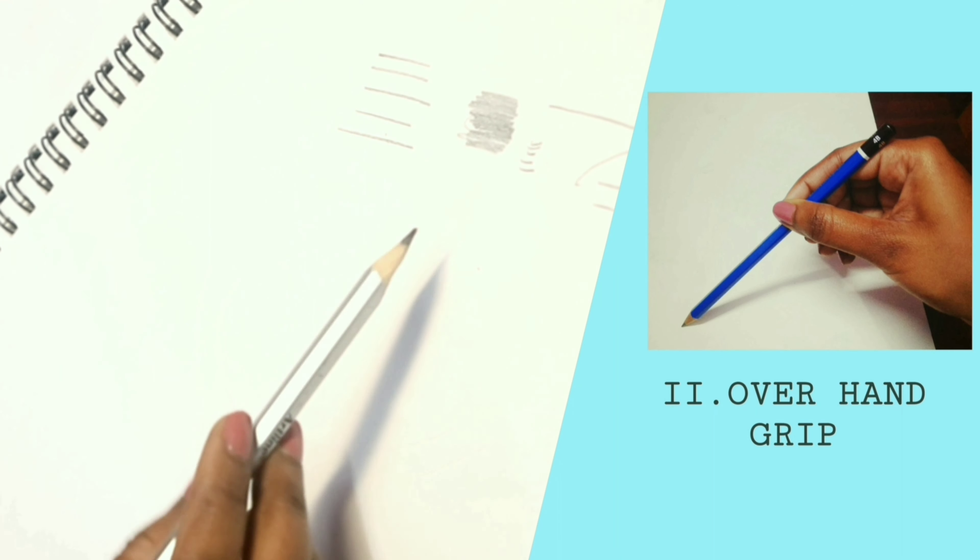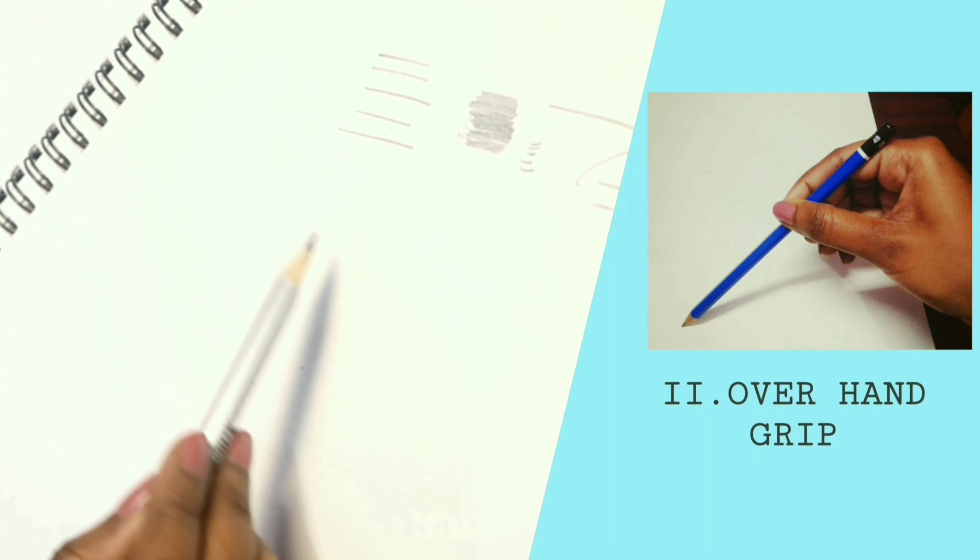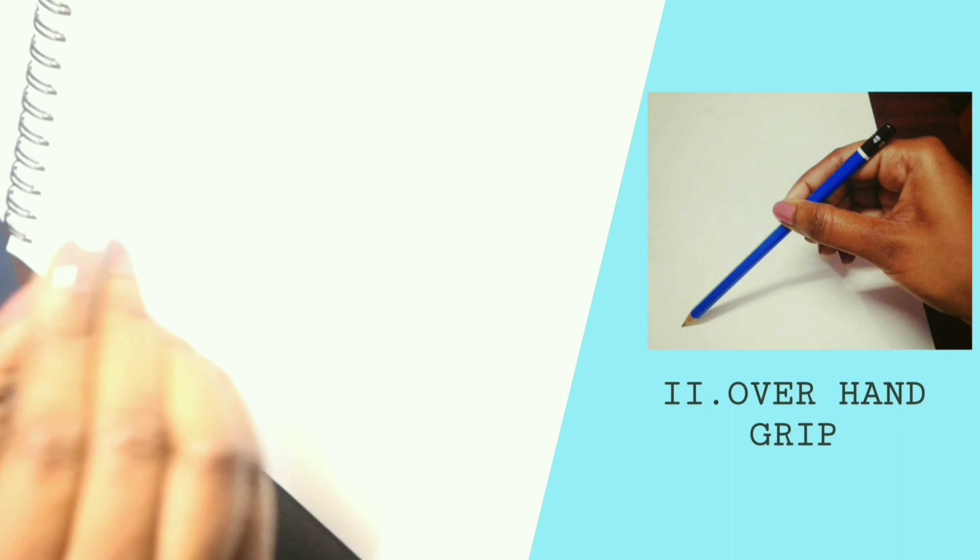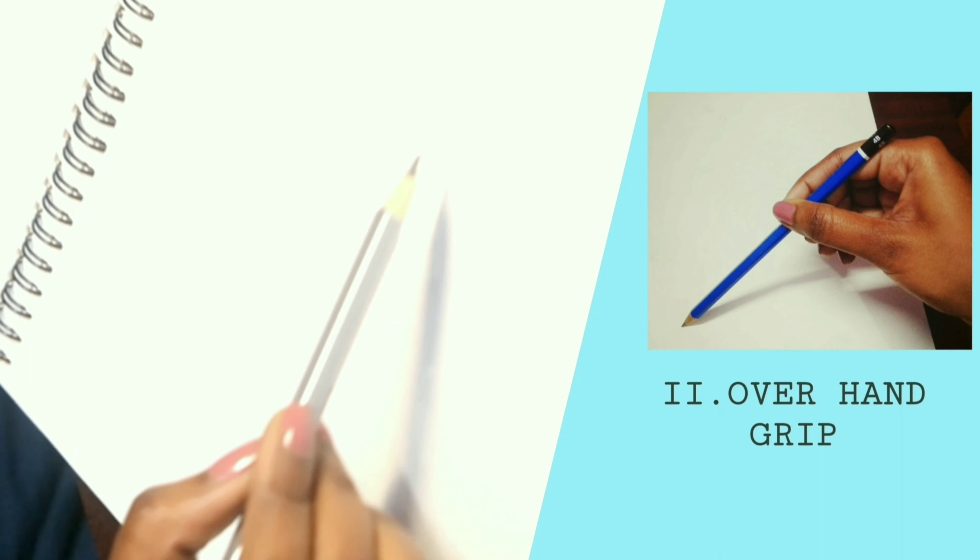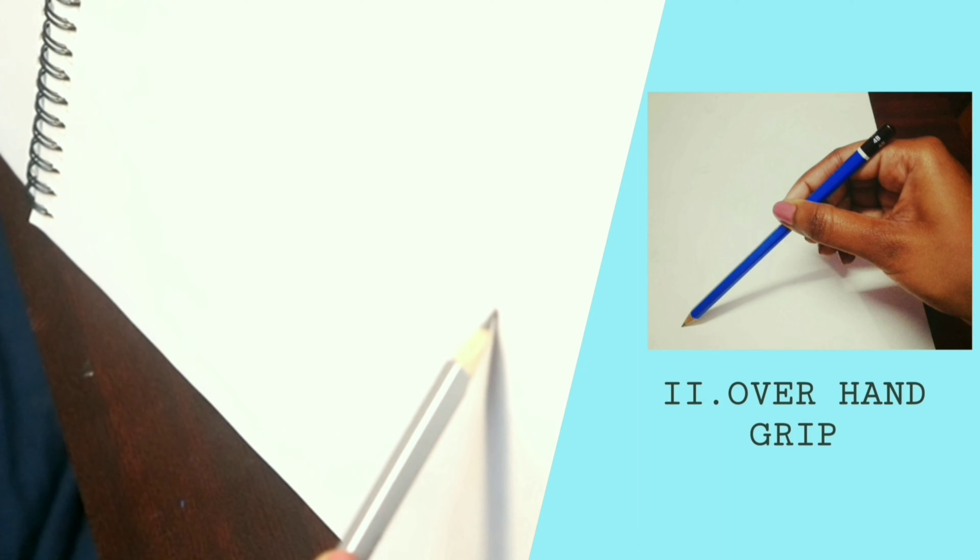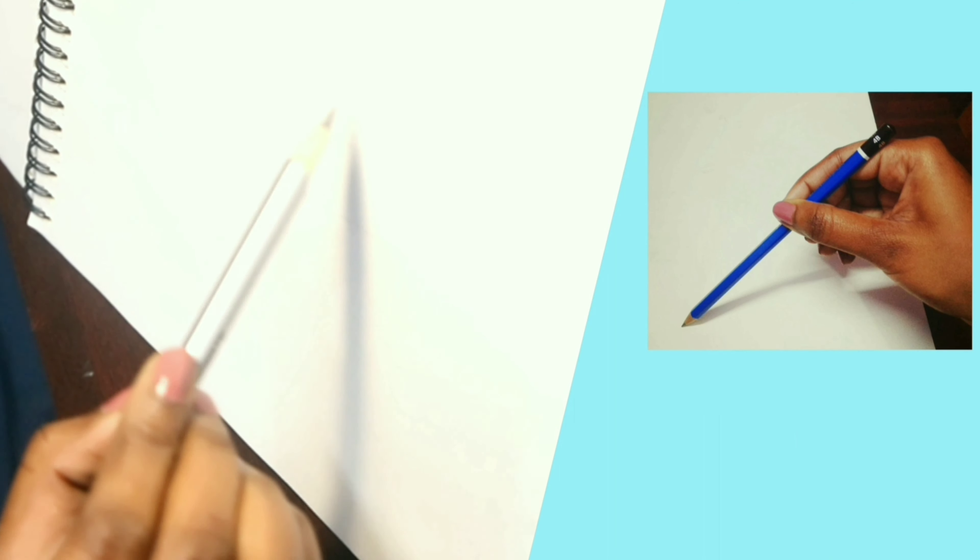The grip is best used to work on paper mounted on a slanted or vertical easel like this. Just bend the pencil or you can change the angle of the pencil as per the requirement, just like this.